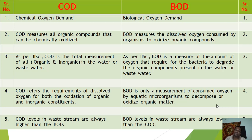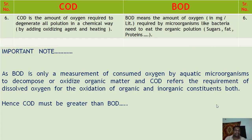COD is the amount of oxygen required to degrade all pollution in a chemical way, that is by adding an oxidizing agent and heating. These are the processes by which we can degrade all the pollution in wastewater or water. BOD means the amount of oxygen required by microorganisms like bacteria to eat the organic pollution present in the wastewater or water — that is the sugars, fats, and proteins.